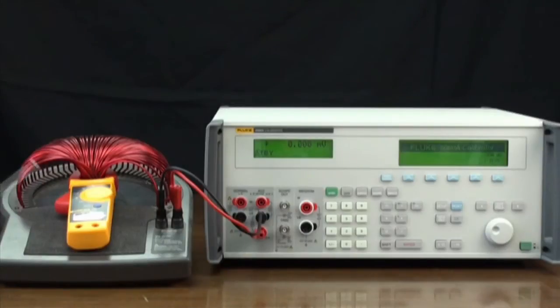Calibrating a Clamp Meter with the 5080A Multi-Product Calibrator. Calibrating current clamps requires a coil. This is a Fluke Calibration 50 turn current coil.